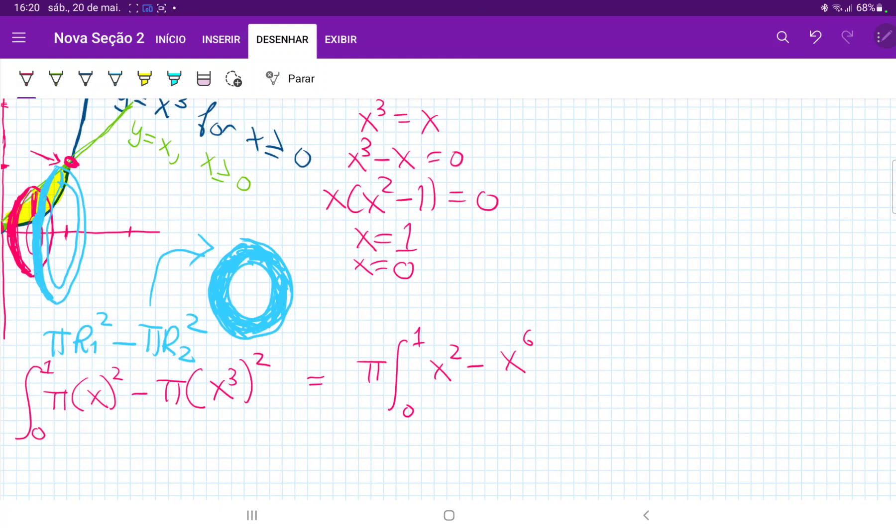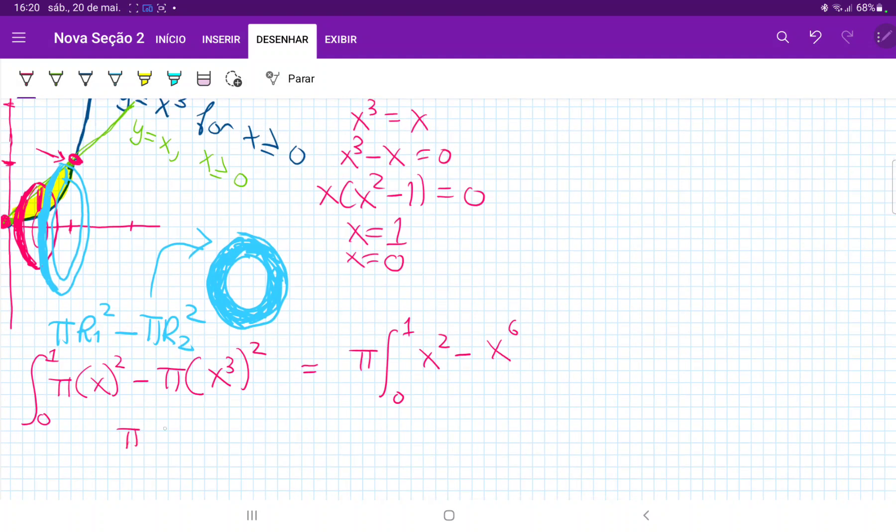So when we evaluate this integral, we have that this is equal to pi times X cubed over three minus X to the seven over seven, evaluated from zero to one. So this is equal to pi times one third minus one seventh. So when we put this into our calculator, this gives us four pi over 21.